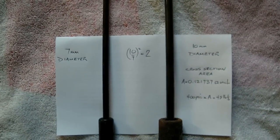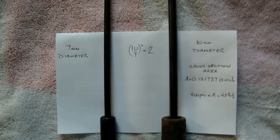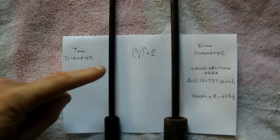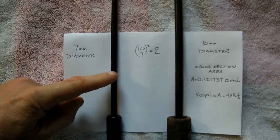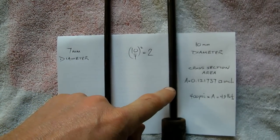So for a given pressure the lifting force is proportional to the cross sectional area of the arm. So this one is 7mm diameter, this one is 10mm diameter.